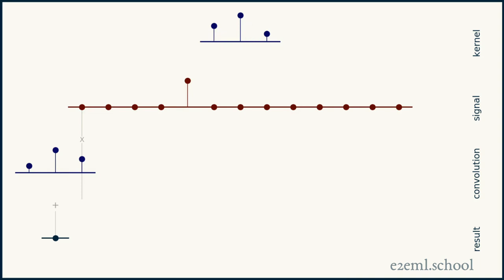To do convolution, we have a signal and a kernel. By convention, the kernel is much smaller than the signal. It's the portion, it's the feature that you'd like to pull out of some part of the signal, wherever it occurs. It's the fingerprint of the feature that we're trying to find.